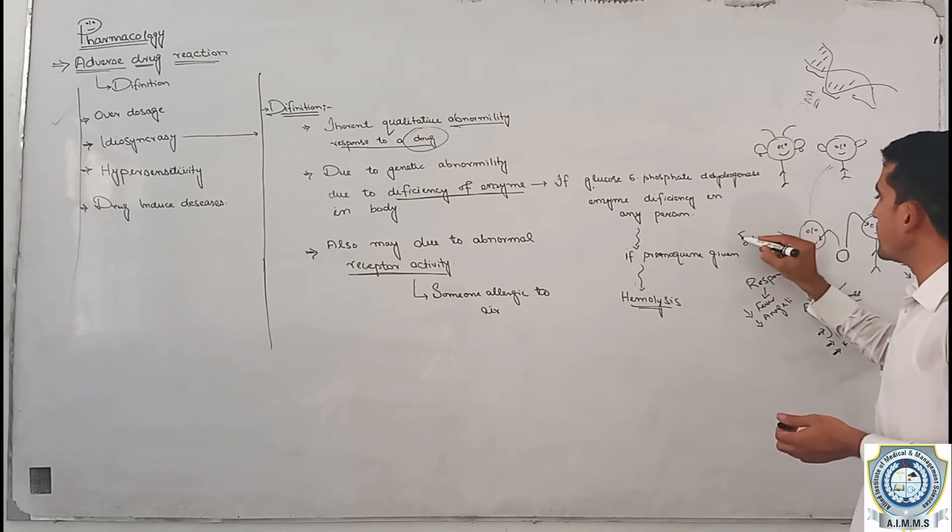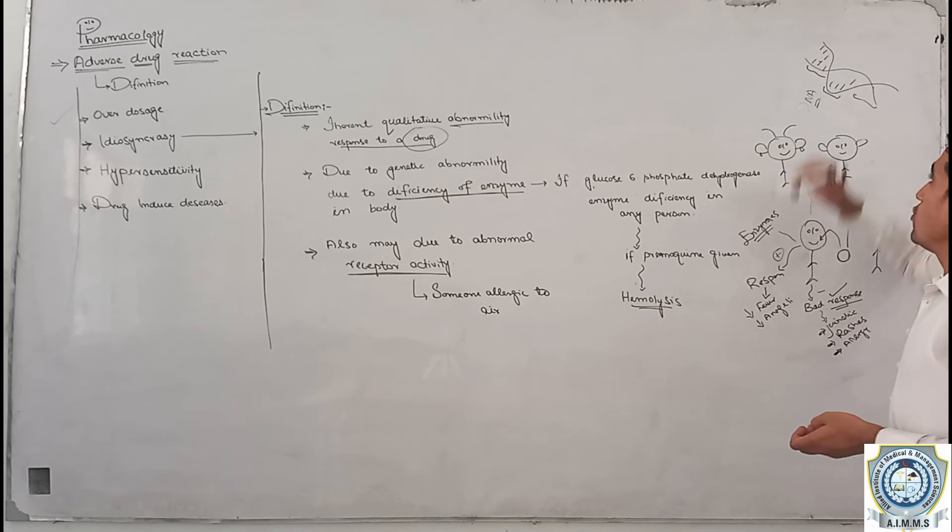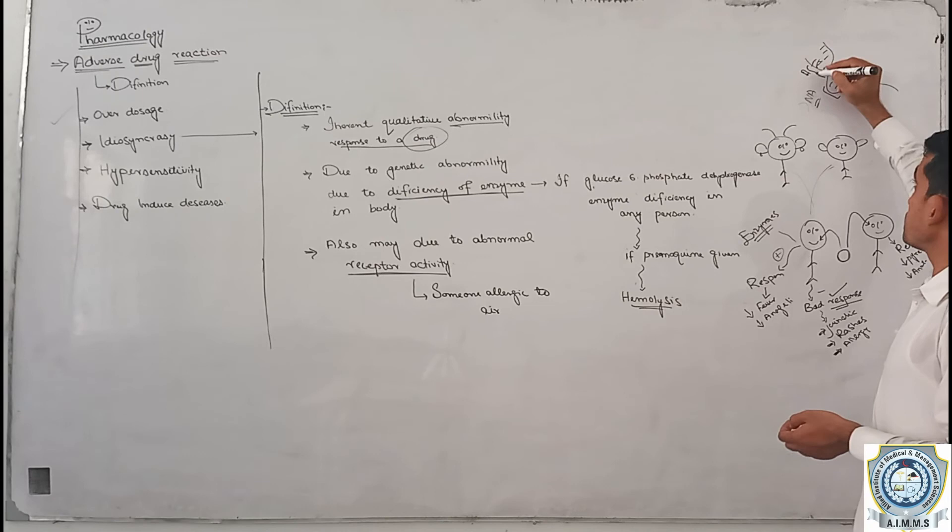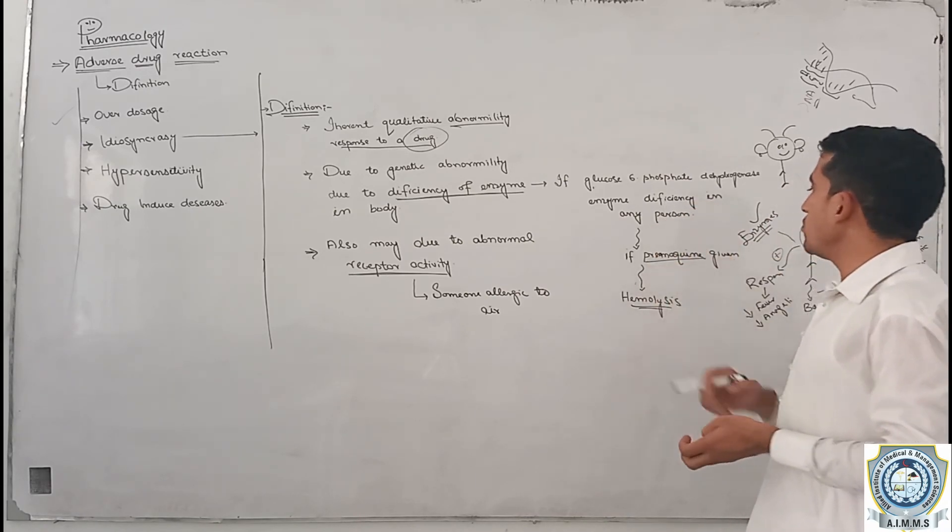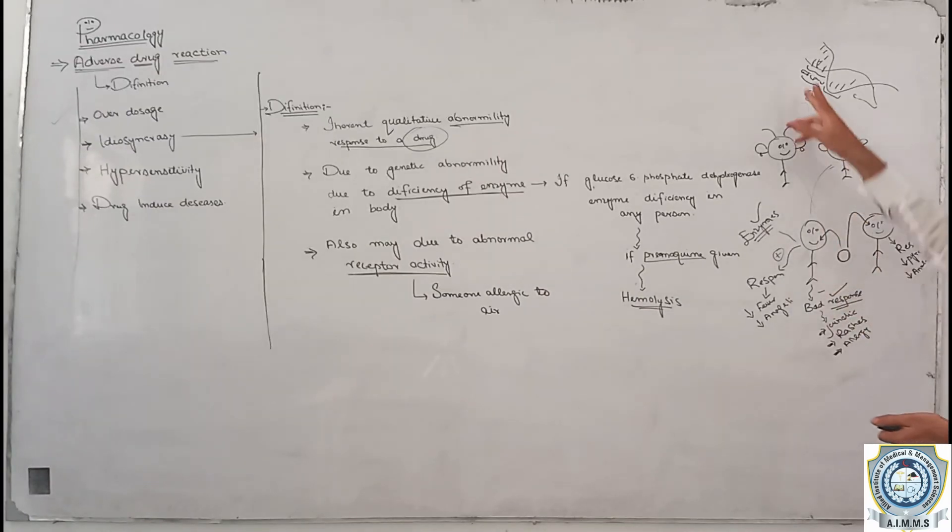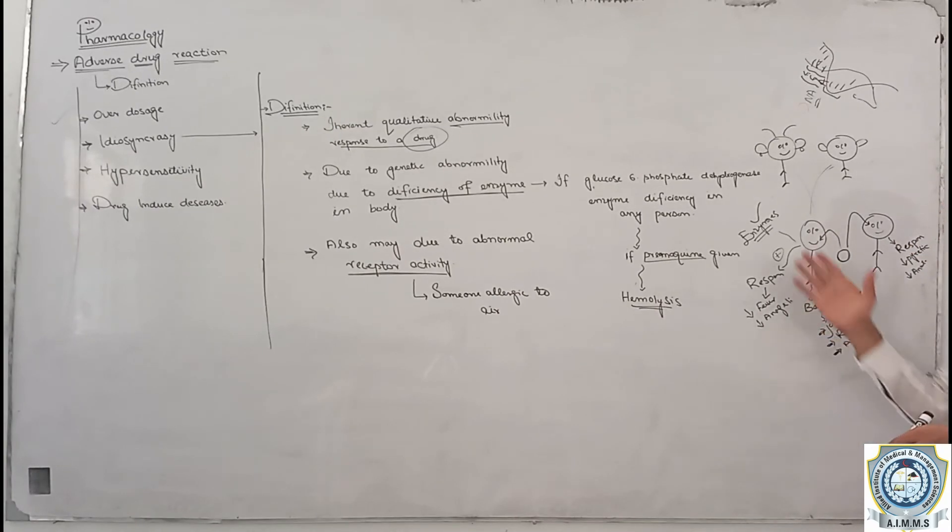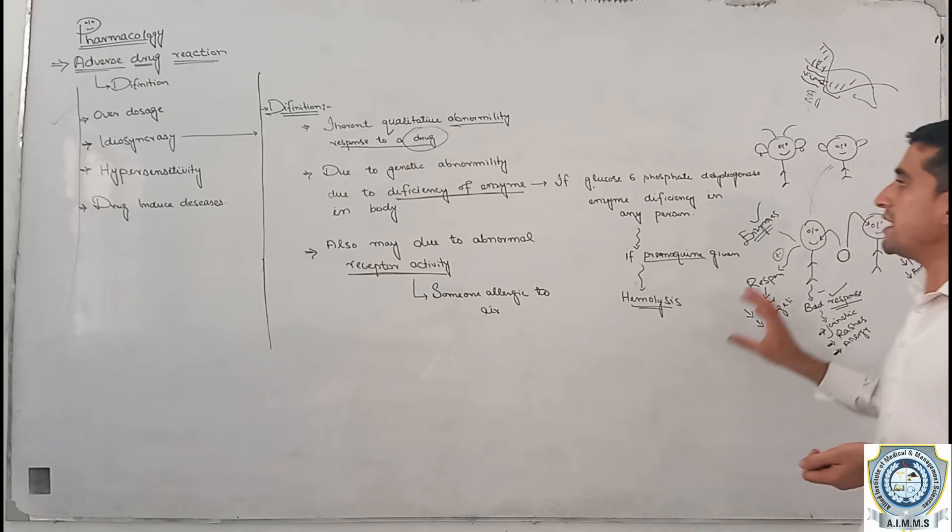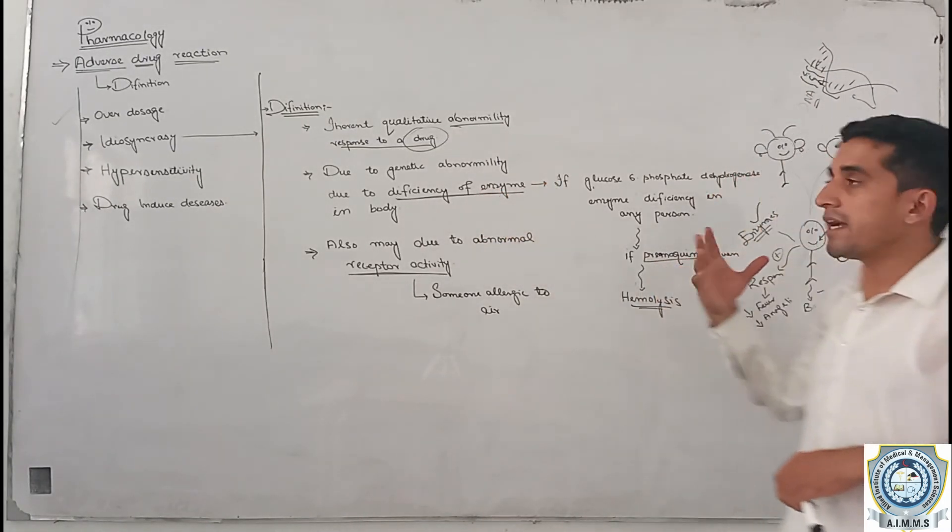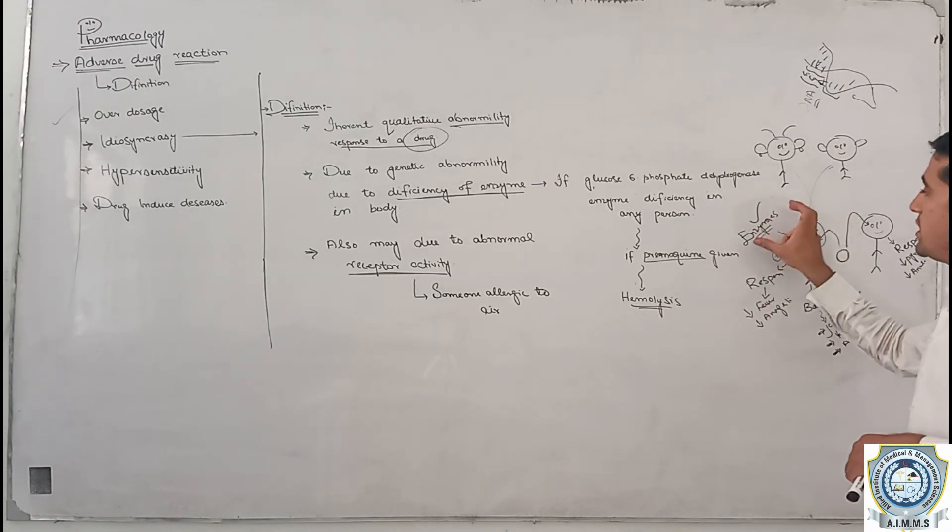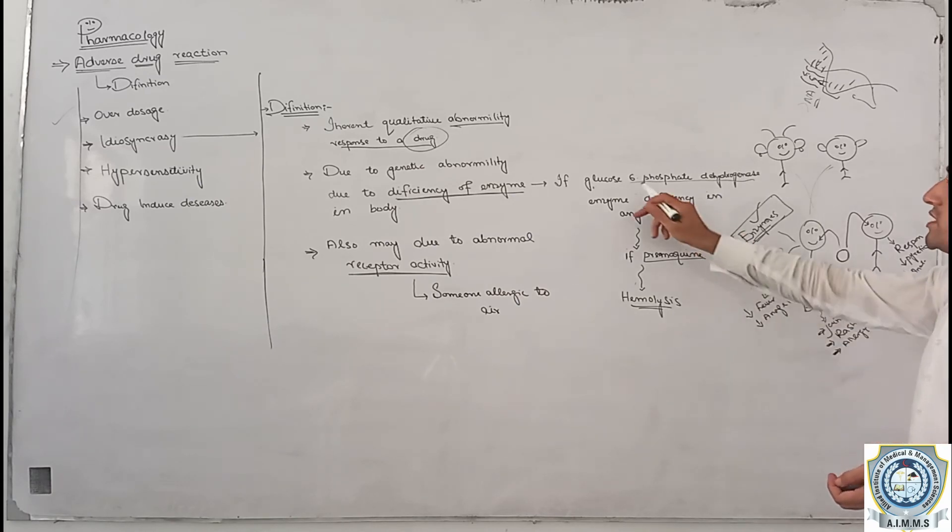If there are enzymes that we have to consider, we can understand enzyme function. The use of certain drugs can induce enzymes, meaning the enzyme activity increases. When enzyme induction occurs, we need to adjust dosing. There are two types of enzyme interactions: induction and inhibition.